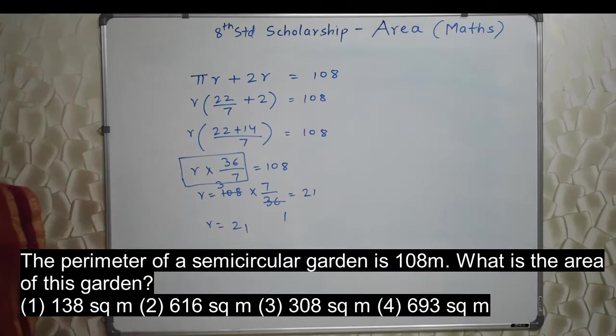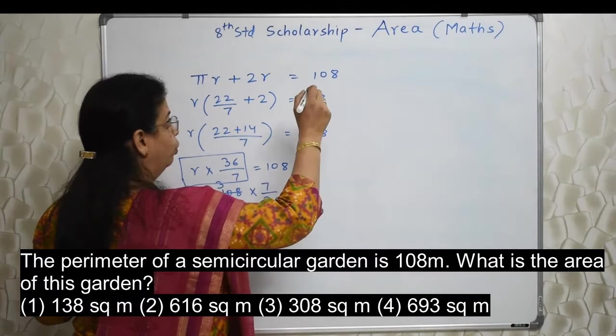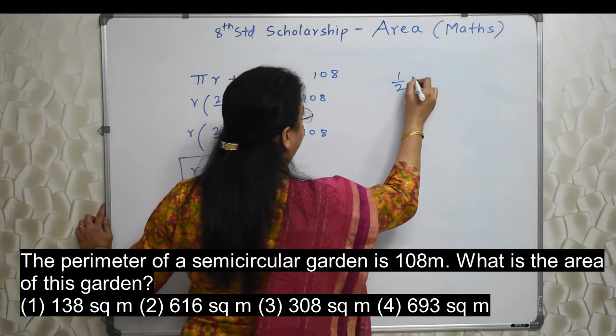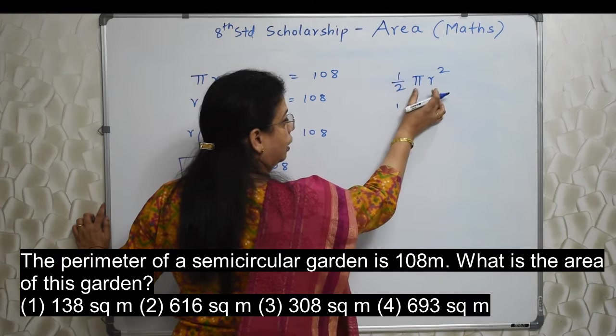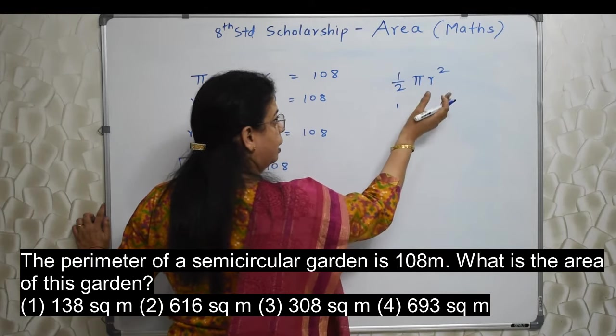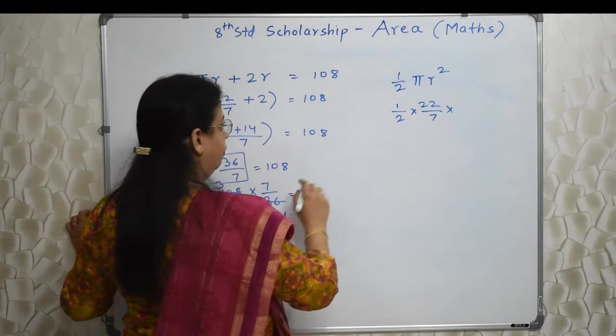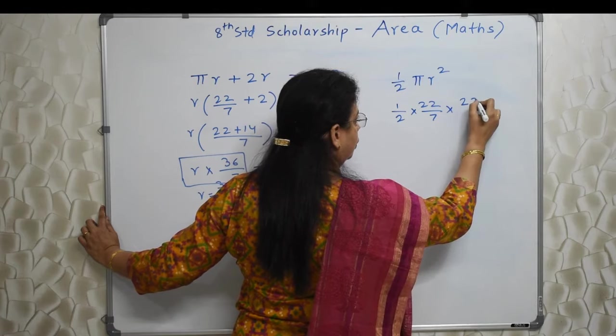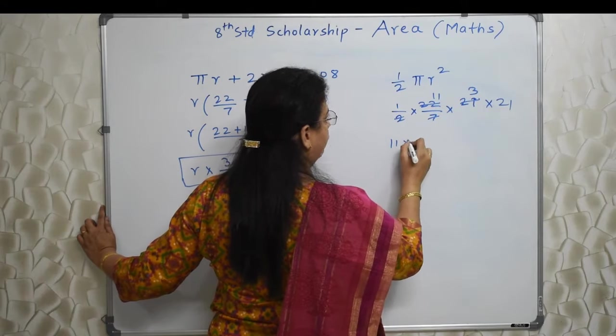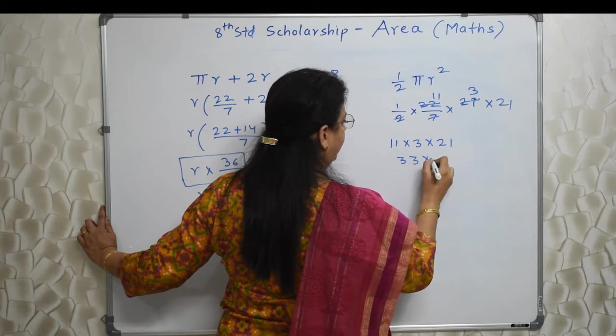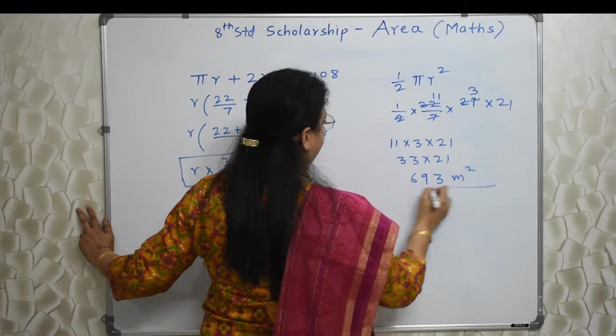Now r is found. Now what we need to find out? We need to find out the area. Once you know the radius, what is the formula? Again you need to know the formula. Formula is 1 upon 2 pi r square of a semicircular garden. This formula is half of circle. Circle ka area is pi r square. Semicircular is half of circle. So half of pi r square. So 22 upon 7 here. And r we have found out 21. Preferably don't write 441, write 21 into 21. So 7 3s are, 2 11s are. So 11 into 3 into 21. So 33 into 21 we need to do. So 63, 69. So 693 meter square. This is the area.